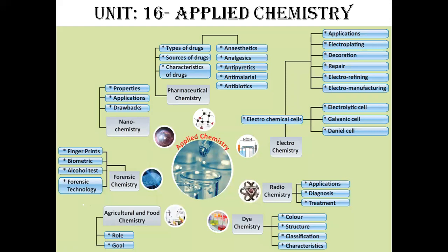These topics are included in Dye Chemistry. The next one is Agriculture and Food Chemistry — covering the role and goal of Agriculture and Food Chemistry. The next one is Forensic Chemistry, covering what is meant by Forensic Technology, Alcoholic Testing, Biometrics, and Fingerprints. All these topics are included in Forensic Chemistry. We will discuss them one by one in future classes.